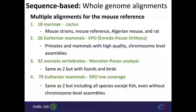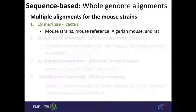The mouse reference genome has multiple alignment sets: 18 Muridae (including mouse strains, reference, Algerian mouse, and rat), 26 eutherian mammals via the EPO pipeline (including primates and chromosome-level assemblies such as human), 32 amniote vertebrates (adding lizards and birds), and 73 eutherian mammals (scaffold-level assemblies, excluding fish). For mouse strains, multiple alignments are available only within the Muridae group. You can do both pairwise and multiple alignments within this group.